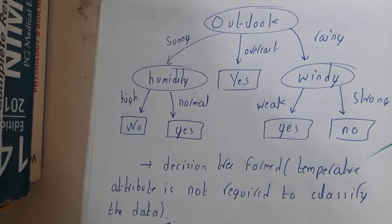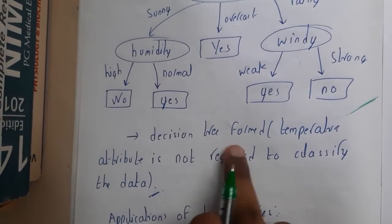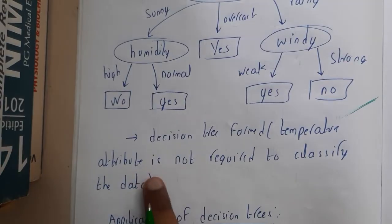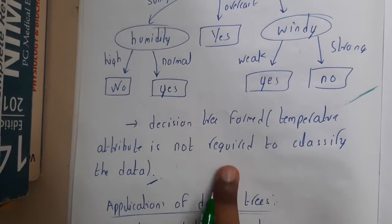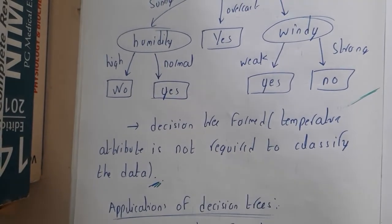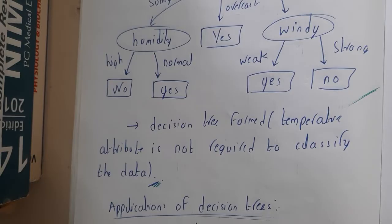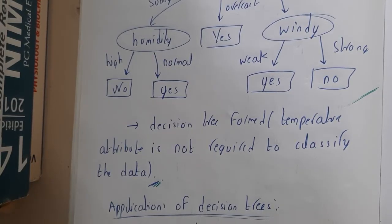This is your final decision tree. The temperature attribute is not required to classify the data in this dataset. I hope everyone got a basic idea about this. Based on your interest, if you want to solve it, practice with the problem.